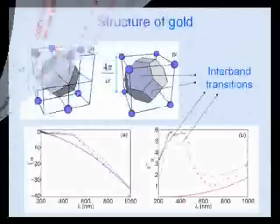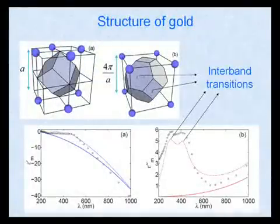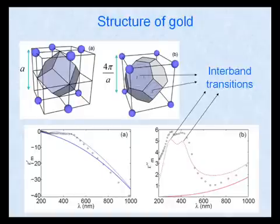We start our analysis from the band structure of gold, which is characterized by a face-centered cubic. The Wigner-Seitz primitive cell is a rhombic dodecahedron. The reciprocal lattice is a body-centered cubic, where the Wigner-Seitz primitive cell is a truncated octahedron.